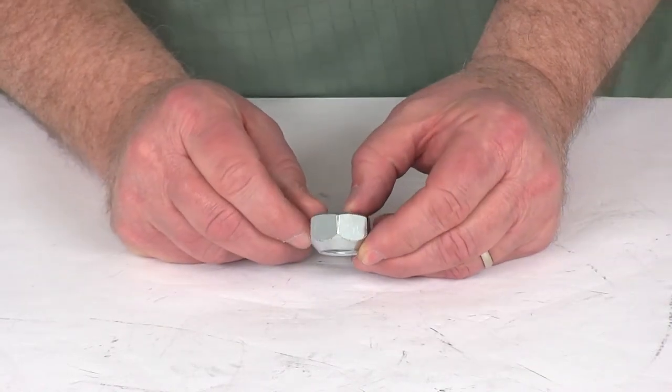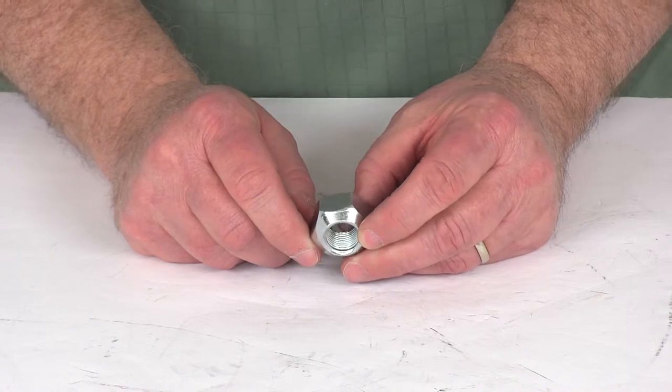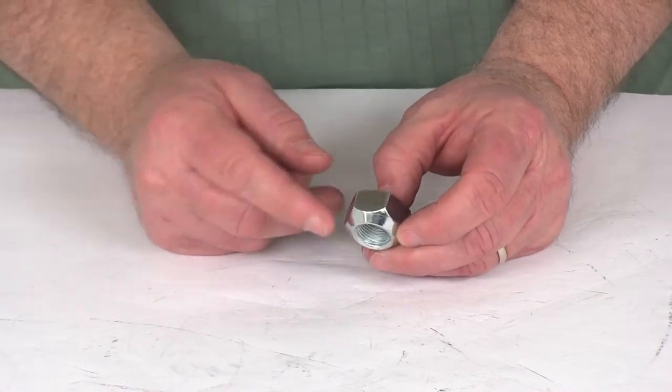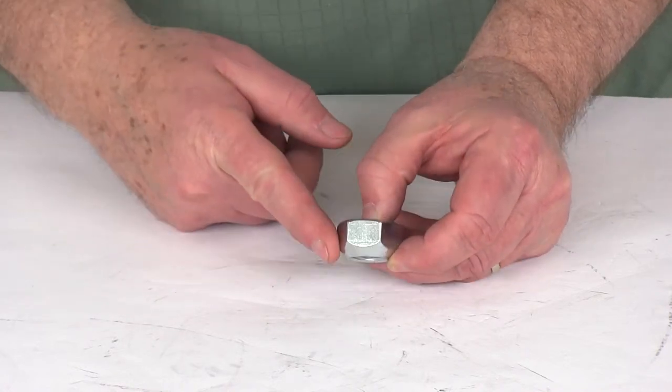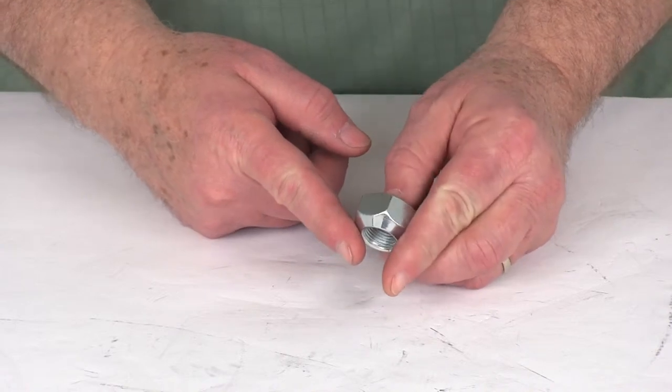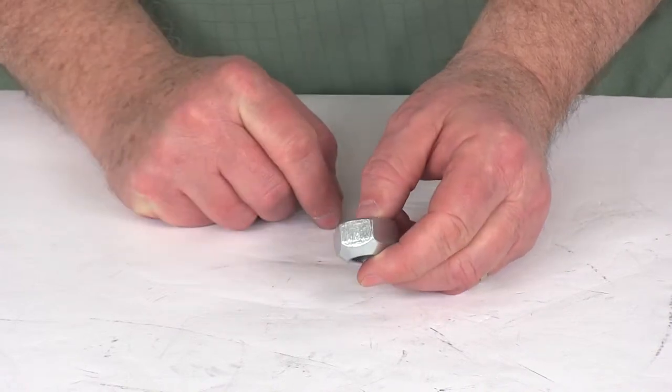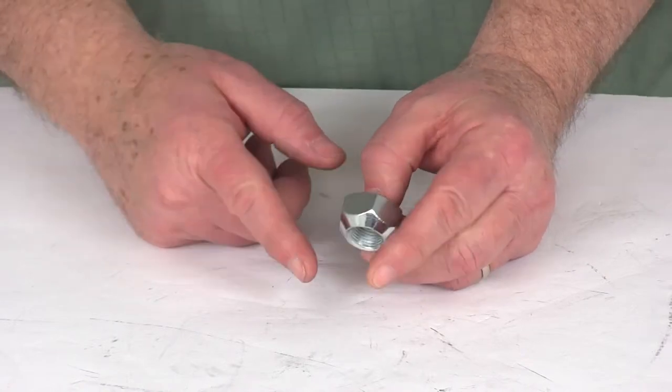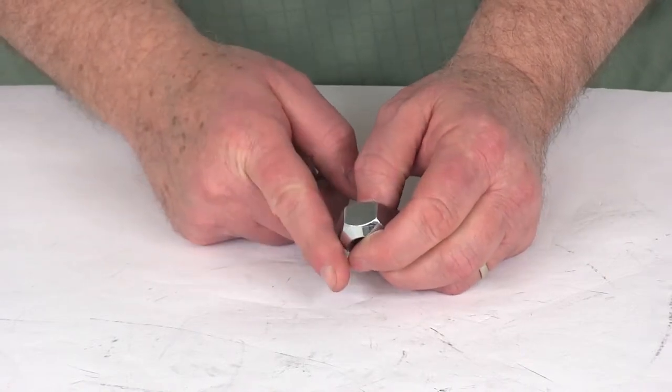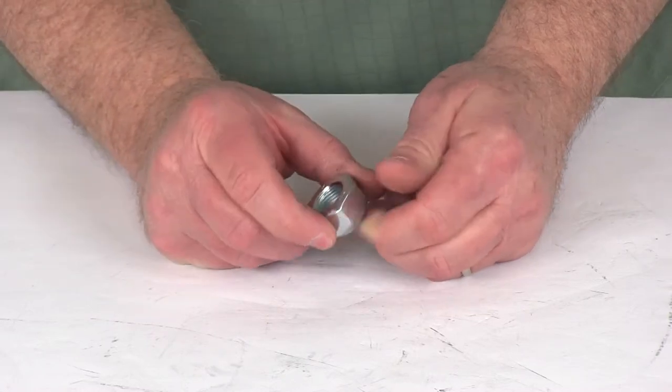This one is called a 90 degree cone which gets a little confusing because when you think of 90 degrees you're thinking of a right angle. And that's actually what this is because this taper right here is a 45 and this one on this side is a 45. So when they go together they make the 90 degree cone. So basically when you're measuring the taper on a lug nut it's from taper to taper, not from the taper to the center line of the lug nut itself.